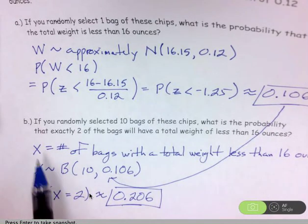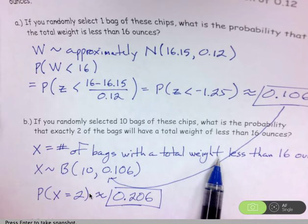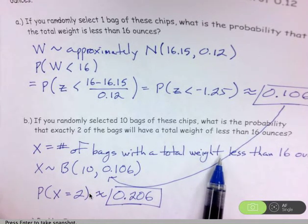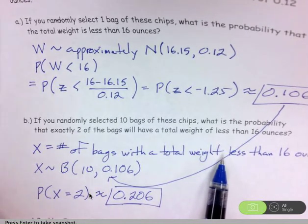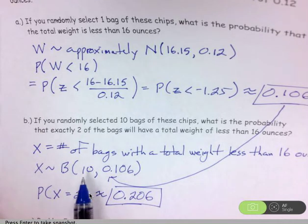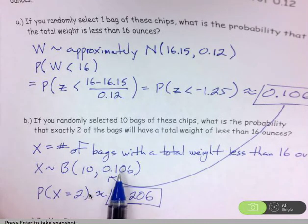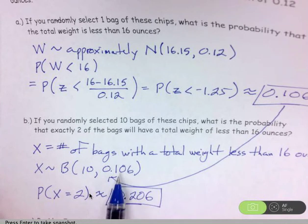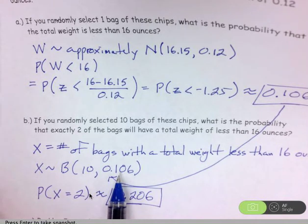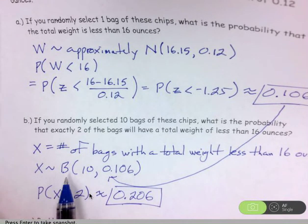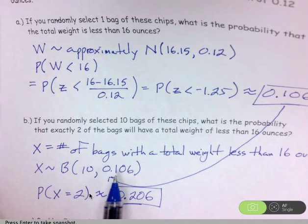Well, X is the number of bags with a total weight less than 16 ounces. So either the total weight is or isn't less than 16 ounces. There is a fixed number of trials. We have calculated the probability of success. And as long as those trials are independent, then we can use a binomial distribution with 10 trials and a success probability of 0.106 in order to find our likelihood.